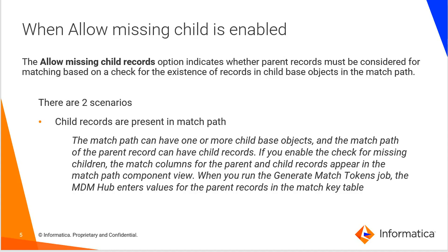When allow missing child is enabled, the allow missing child records option indicates whether parent records must be considered for matching based on the match path. It consists of two scenarios: one when the child records are present in the match path, and the other when the child records are missing in the match path. I am going to be explaining when child records are present in the match path.